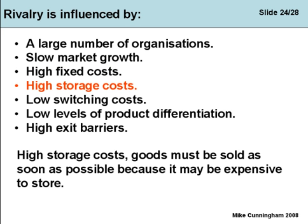High storage costs also drive rivalry. Goods must be sold as soon as possible because they may be expensive to store. Obviously food must be sold quickly as it is perishable. But if goods are large and bulky, taking up a lot of space, then space is money — warehousing, insurance, security, and floor space are all expensive. The idea is to get items through the market as quickly as possible, but if all competitors are trying to do the same thing, prices will be pushed down.